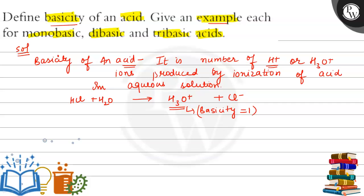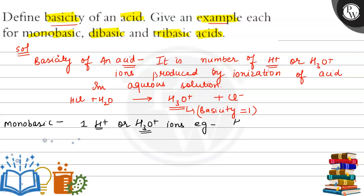Now the next part is to give examples of monobasic, dibasic, and tribasic acids. Monobasic acids are acids that have only one hydrogen ion — that is, they release only one H⁺ or H₃O⁺ ion. If an acid contains only one replaceable H⁺ ion, then upon ionization it can give only one H₃O⁺ ion.